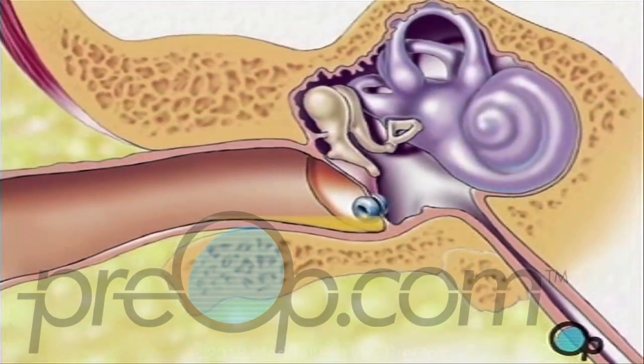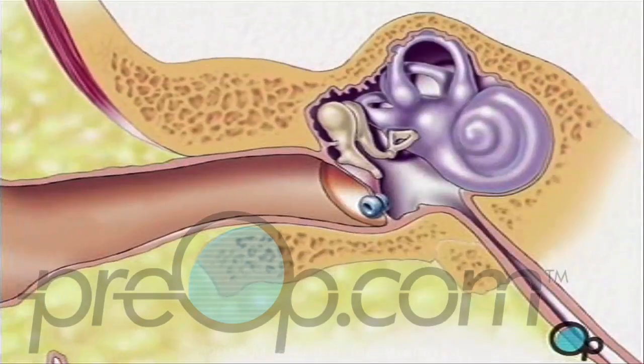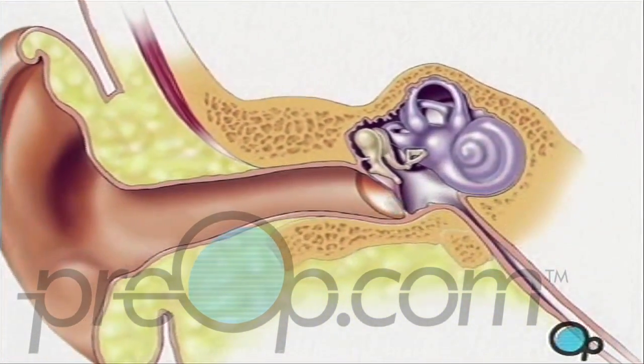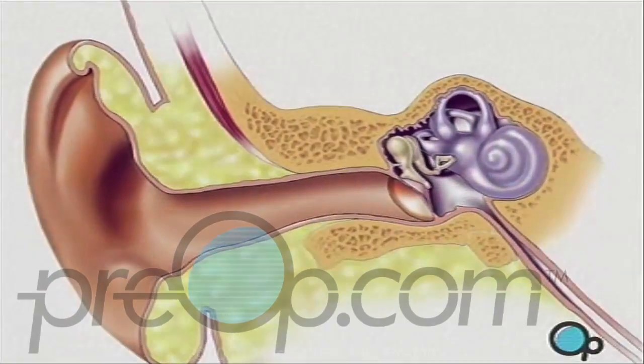Sutures are not required, as the eardrum will heal naturally. And the drainage tube will either fall out by itself, or it will be removed by the surgeon one to three weeks later.